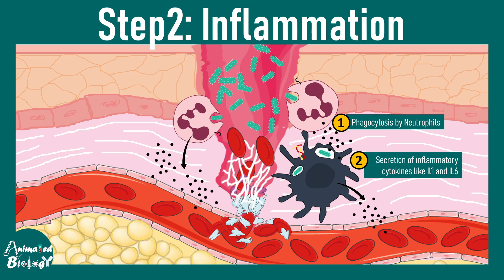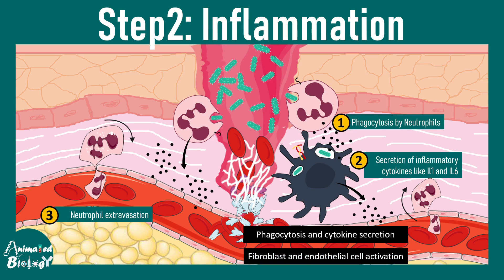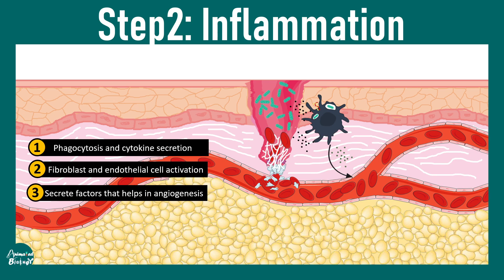Several inflammatory cytokines such as interleukin-1 and interleukin-6 are secreted by macrophages and neutrophils. This attracts several other immune cells to the region of invasion so they can fight the infection better. Neutrophil extravasation is the next step. The key events in this inflammation phase are phagocytosis, cytokine secretion, and fibroblast and endothelial cell activation. These inflammatory cytokines can also activate fibroblasts and endothelial cells in the near vicinity.